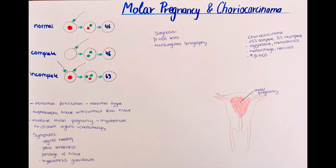Another diagnostic test is a transvaginal ultrasound, where we can see the molar formation inside the uterus in the form of an echogenic mass diffusely interrupted by hypoechoic cystic spaces. It resembles a bunch of grapes, Swiss cheese, or a snowstorm. In a complete mole, we also recognize the absence of amniotic fluid, fetal parts, or a fetal heart tone. In an incomplete mole, we will be able to see fetal parts, a heart rate, and some amniotic fluid.